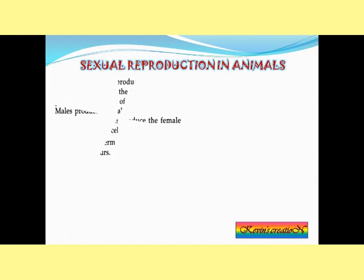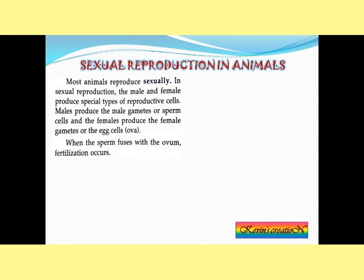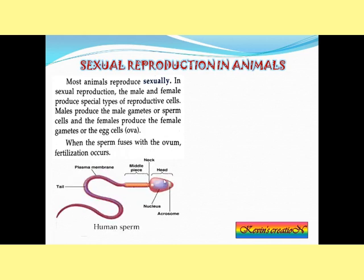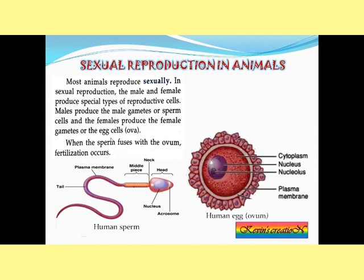Let us start with sexual reproduction in animals. Most animals reproduce sexually. In sexual reproduction we need two parents — male and female — and they produce special types of reproductive cells. The male produces the male gamete, also called sperm. The sperm has a head, a tail, a middle piece, and a neck. The female produces the female gamete, also called the egg cell or ovum.